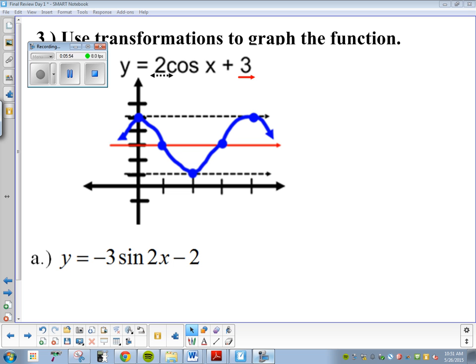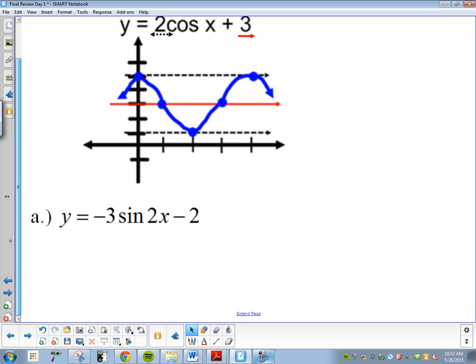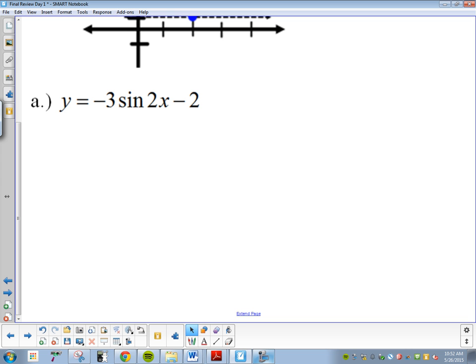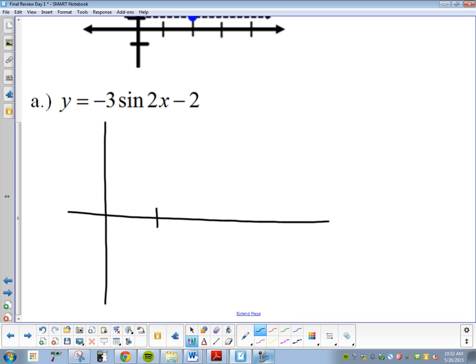Now we're graphing. We did this in Bellwork already. You should be good at it or getting better at it. Negative three sine of two x minus two. We're following our graphing checklist. The first thing it asks you to do is to find the period length and label it.